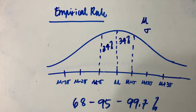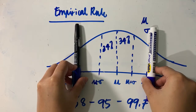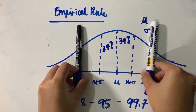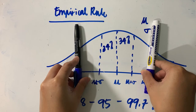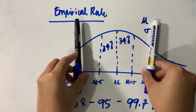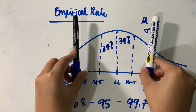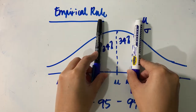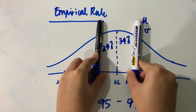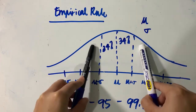The next part of the rule is that 95% of the entire distribution is found within two standard deviations — that means two standard deviations above the mean and two standard deviations below the mean. So if the total is 95% and we already have 68% in the inner region, then 95 minus 68 gives us the remaining percentages in the two outer regions.